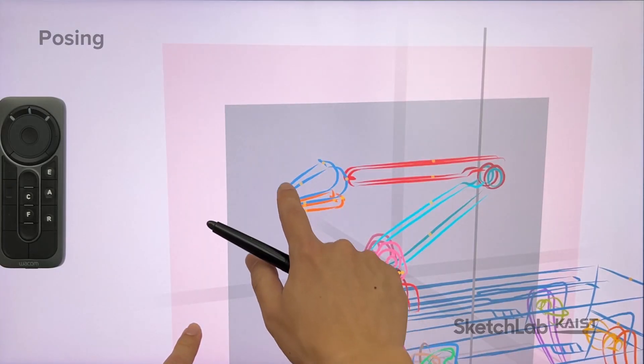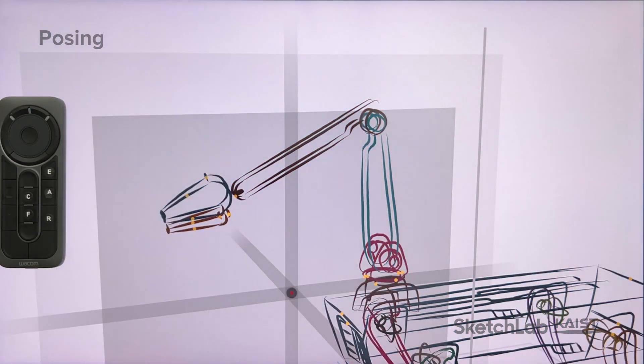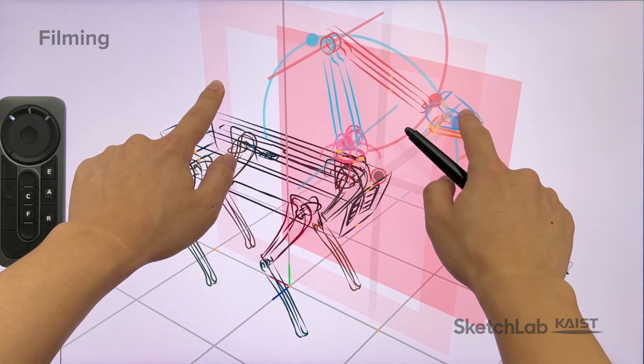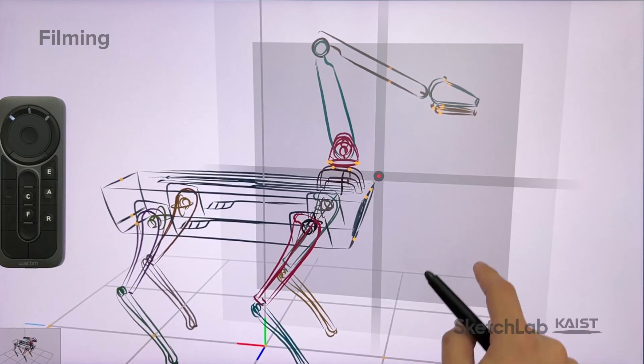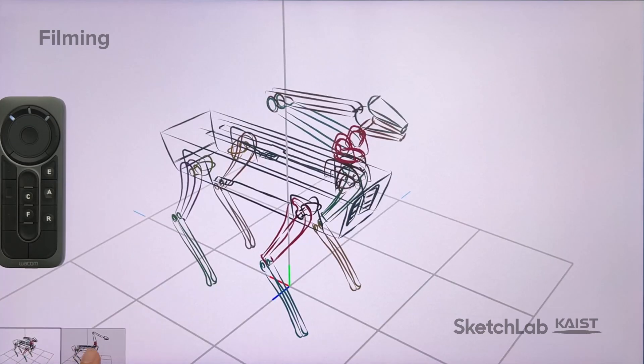Inverse kinematics with constraints, such as a planar constraint, can be performed using the sketch plane widget. By pressing the Capture Keyframe button, the designer can save desired poses seen from desired viewpoints, and create a sequence of keyframes, each of which can be recalled at any time.